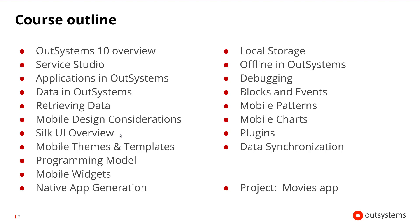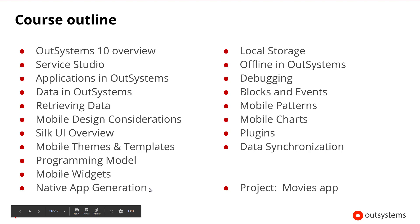Then we'll look at the user interface. Silk UI is a set of capabilities that helps us build user interfaces very quickly. We'll do an overview of the parts of Silk UI and what it provides to help us build things faster. Then we'll look into the Silk UI themes, which help provide the overall look and feel of our app and give us a basic framework for building the app itself. Then we'll review the programming model and look at some of the mobile widgets that help us build up the pages from smaller components. Then we'll take some time to look at how to generate the mobile app so that we can install it on our phone or make it available in an app store.